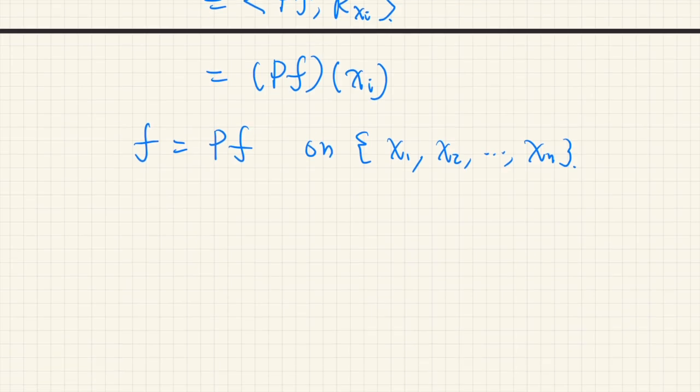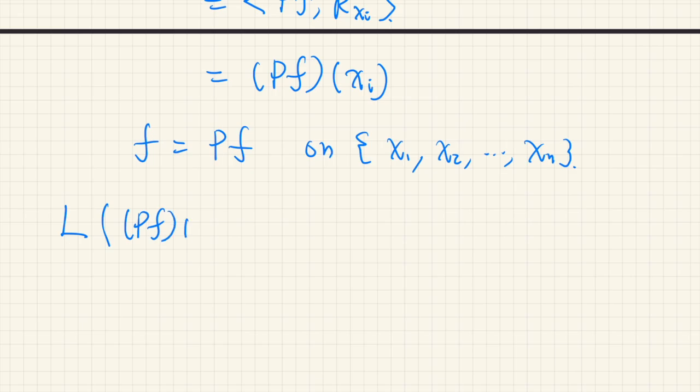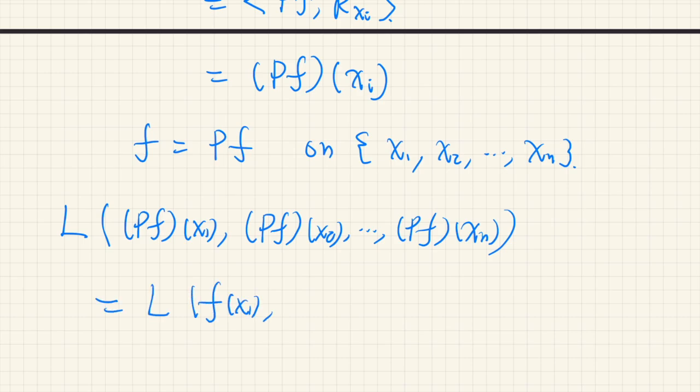So, that means the function L of Pf(x1), Pf(x2), and so on, Pf(xn), this value is equal to L of f(x1), f(x2), and so on, f(xn). So, the value of the function L doesn't change if we use Pf instead of f itself.